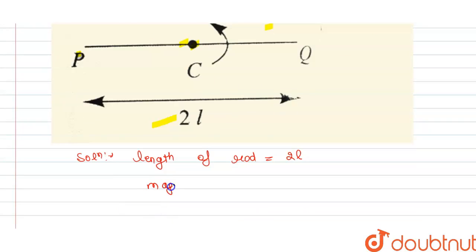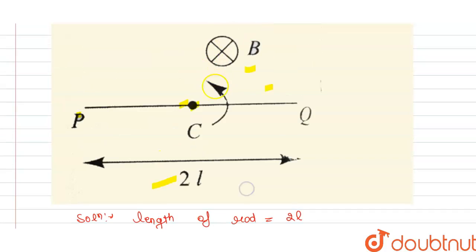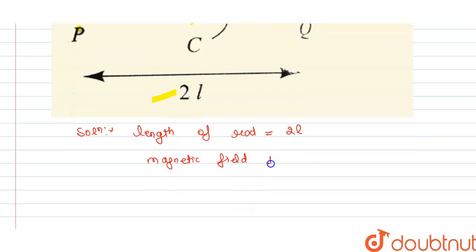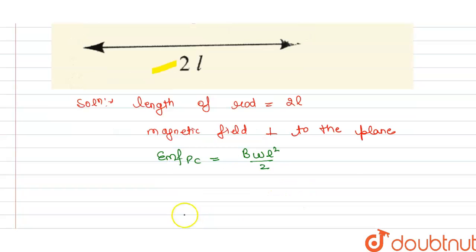And it is given to us magnetic field, this field is perpendicular to the plane. So we can find the EMF due to PC, so this will equal to B omega l squared divided by 2.